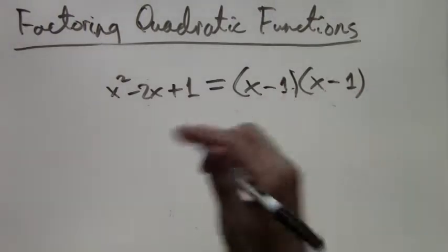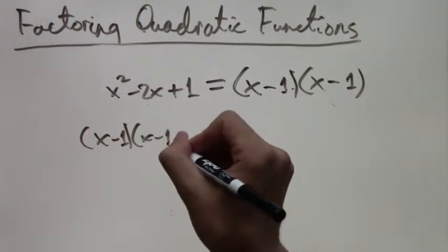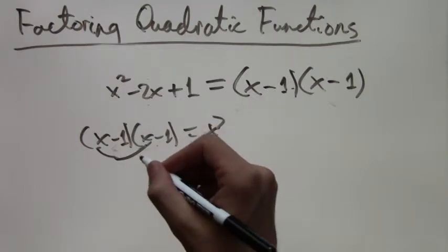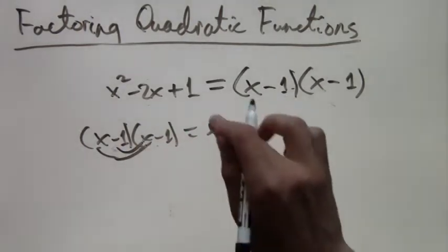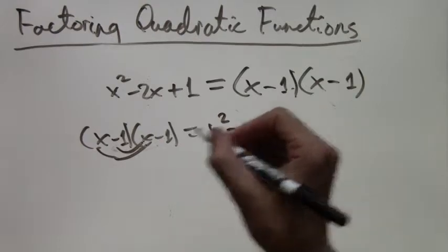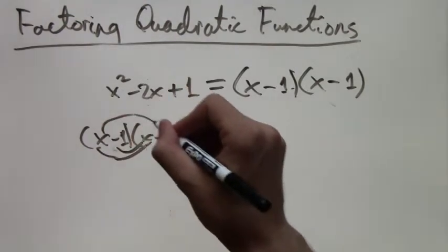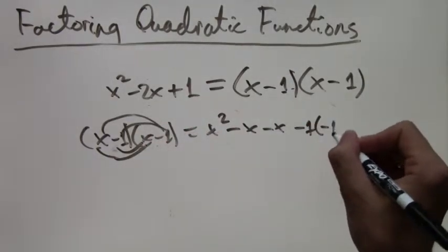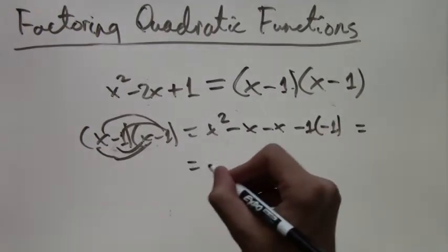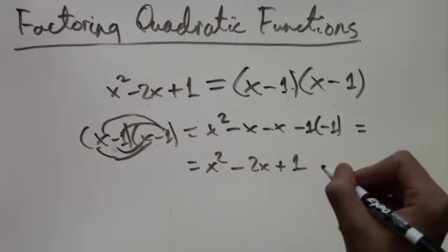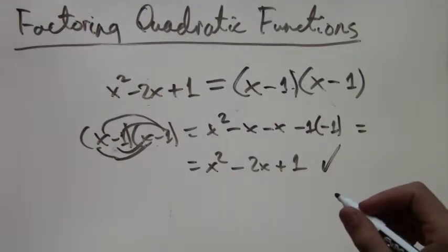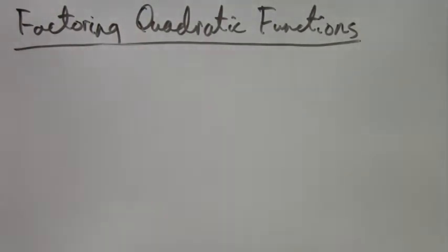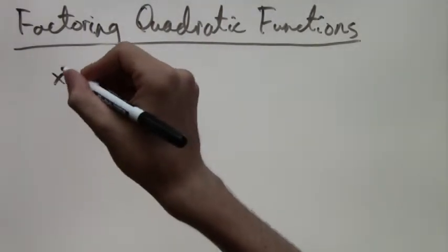So now we can foil this back out and make sure our answer is right. We have x times x is x squared, and then minus x minus another x, and negative 1 times negative 1 is plus 1. And notice we have the sum: negative 1 plus negative 1 is negative 2, so negative 2x, and the product is positive 1. So that's where that comes from. But you don't really have to worry about that. You just apply the rule every time and it'll work.